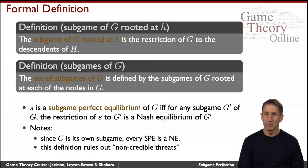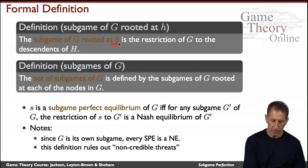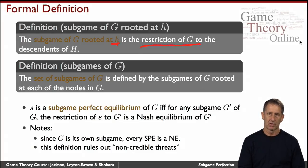Let's first define a subgame. Looking at some node in the game, node H, the subgame of G rooted at H is a restriction of G to the descendants from that node. Similarly, the set of all subgames of G is simply all the subgames rooted at some node in G. A Nash equilibrium is subgame perfect if its restriction to every subgame is also a Nash equilibrium for that subgame.